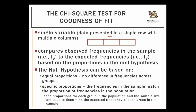So now I want to introduce you to the chi-square test for goodness of fit. This is the chi-square test we use when we have a single variable that we're examining. The data will be presented in a single row with multiple columns — each column represents a different level of whatever variable you are measuring, and we assume independent observations, so no one person fits into multiple groups. This type of chi-square test compares the observed frequencies in the sample to the expected frequencies based on the proportions in the null hypothesis. The symbol FO is the statistical notation for frequencies observed in the sample, and FE represents the frequencies expected under the null hypothesis.